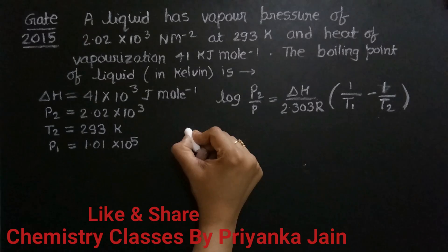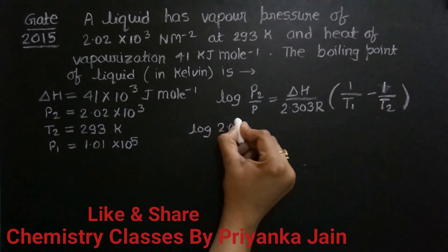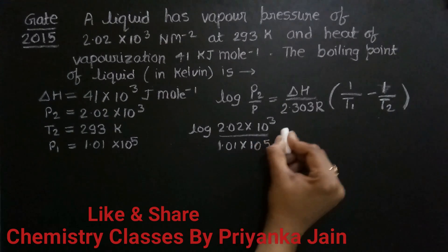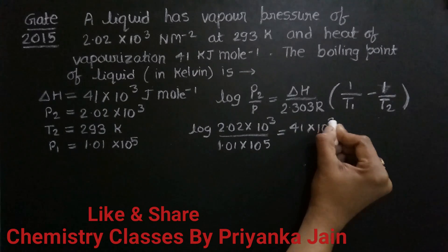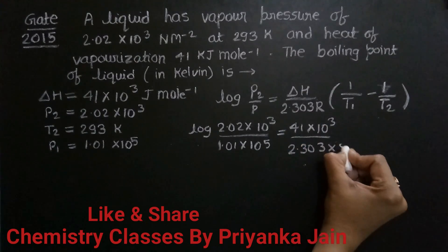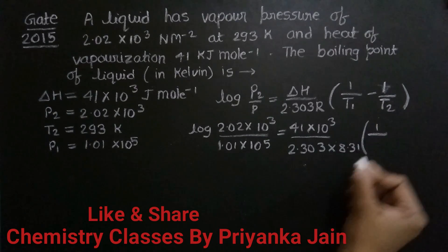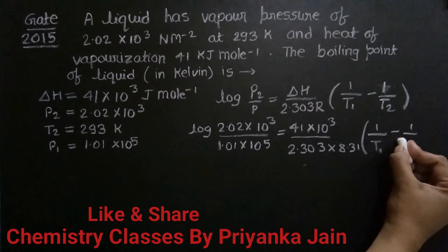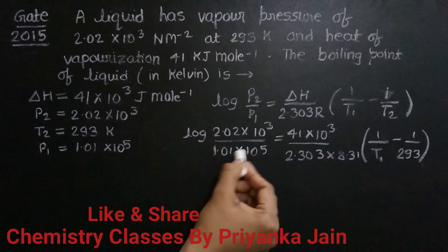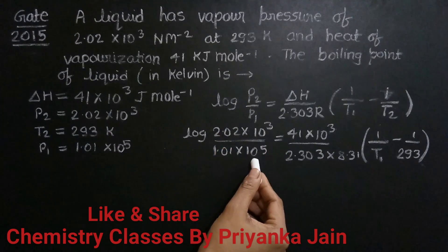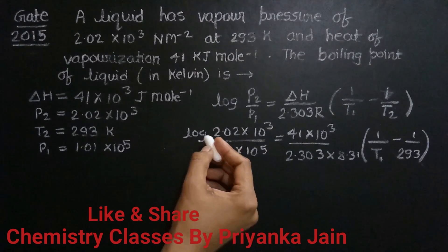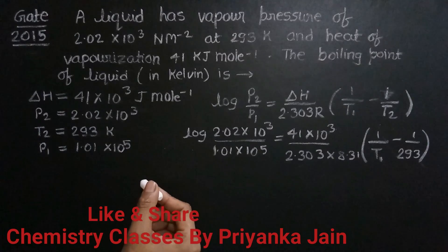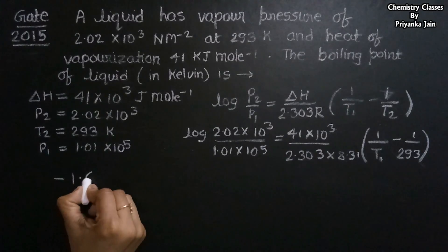Substituting the values: log(2.02×10³ / 1.01×10⁵) = (41×10³ / (2.303 × 8.31)) × (1/T₁ − 1/293). The left side simplifies to log(2×10⁻²) = log(2) + (−2) = 0.3010 − 2 = −1.699. The right-hand coefficient evaluates to 2.143×10³.